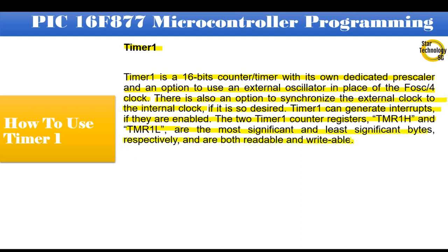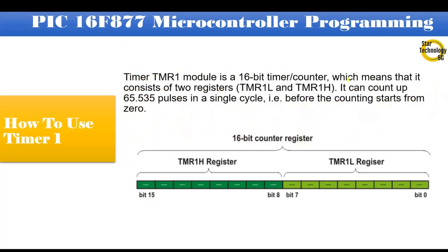Timer TMR1 module is a 16-bit timer/counter, which means that it consists of two registers, TMR1L and TMR1H. It can count up to 65,535 pulses in a single cycle before the counting starts from zero. Here is Timer 1 16-bit register. Timer 1 16-bit timer is divided into two 8-bit registers. That is TMR1H register and TMR1L register.